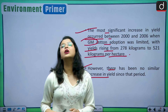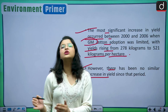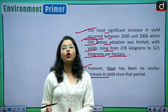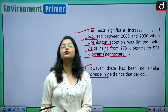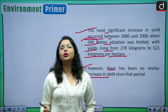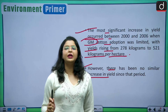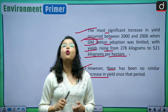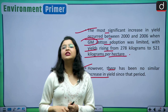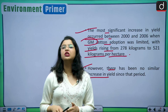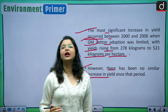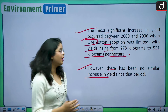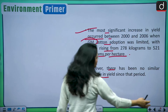This proves that the yield has been stagnant, and the claims about high produce, high yield and cost-effectiveness have all proved to be inaccurate — based on the experience with BT cotton, the only GM crop currently cultivated for commercial purposes in India.